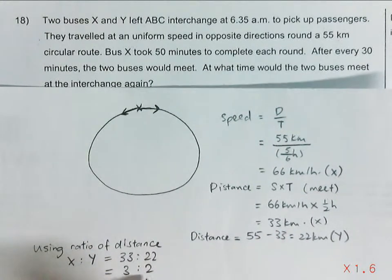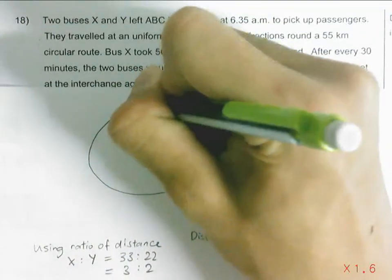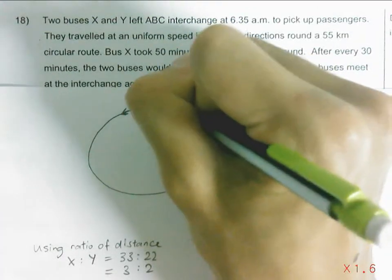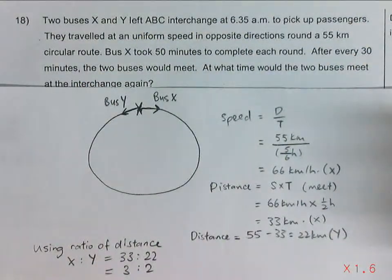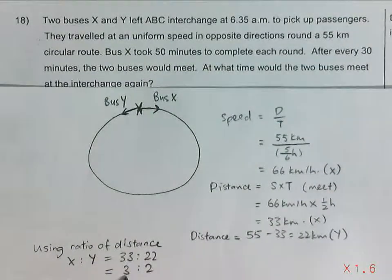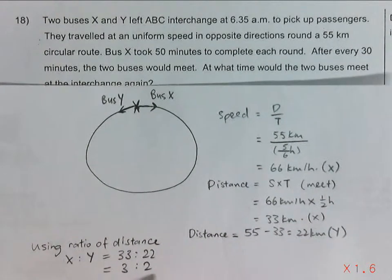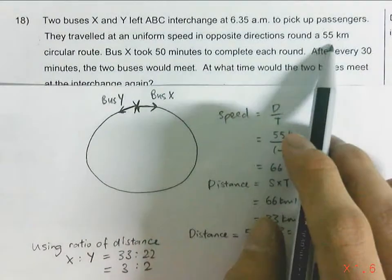Now this information of 3 is to 2 can also be illustrated in the circular route. So the starting point here, let's say that this is Bus X. And Bus Y will travel the other direction. So Bus X will travel 3 units of distance along this circular route, while Bus Y will travel 2 units. So checking again, 33 plus 22 equals the circular loop of 55km.